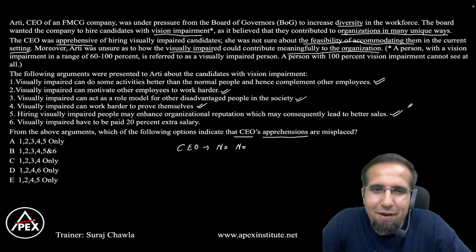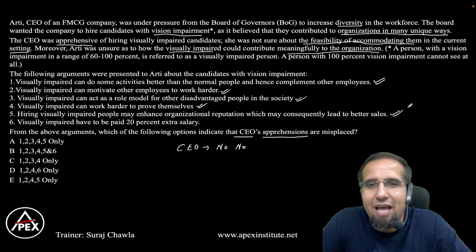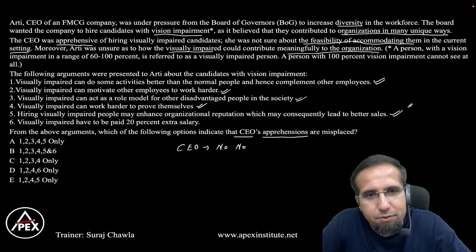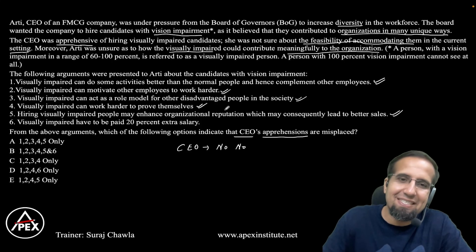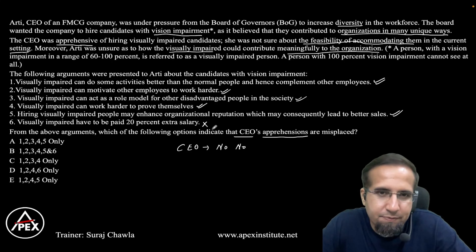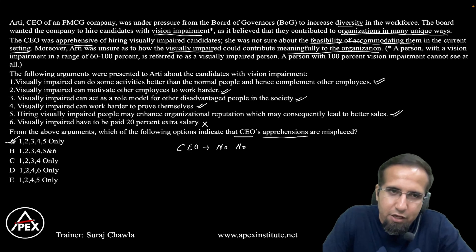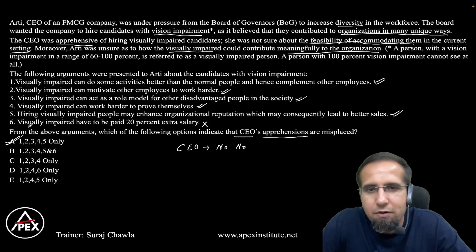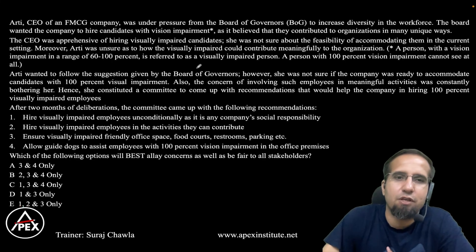Argument 4: visually impaired can work harder to prove themselves — proof they can contribute to the organization, so option 4 is also in favor. Argument 5: hiring visually impaired people may enhance organizational reputation, consequently leading to better sales — counter-argues CEO's apprehension positively. Argument 6: visually impaired have to be paid 20% extra salary — this aligns with CEO's apprehension, since accommodating them with an extra salary increment becomes a cause for concern. Arguments 1 through 5 are all in favor, so the answer is option A: arguments 1, 2, 3, 4, 5.